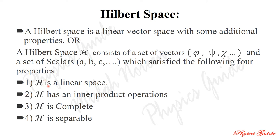The first property: H is a linear space — Hilbert space is a linear vector space. The second property: H has an inner product operation. The third: H is complete. The fourth: H is separable. We explain each of these one by one.